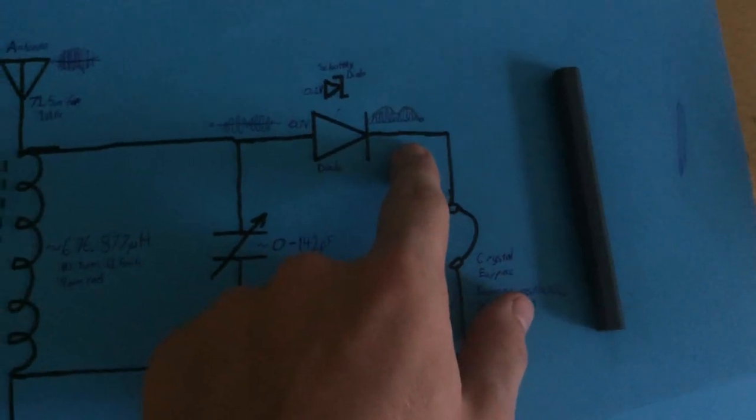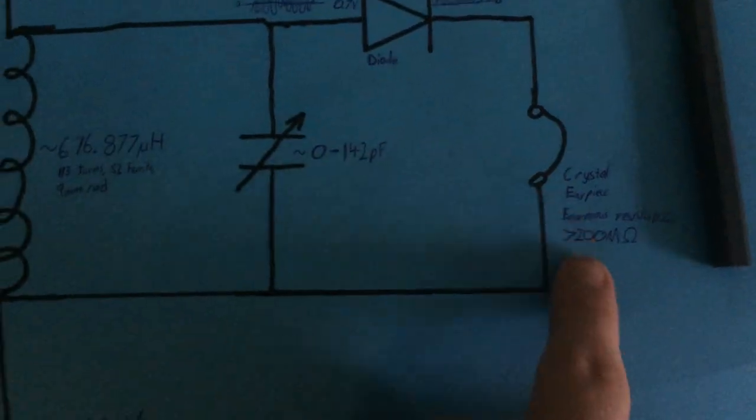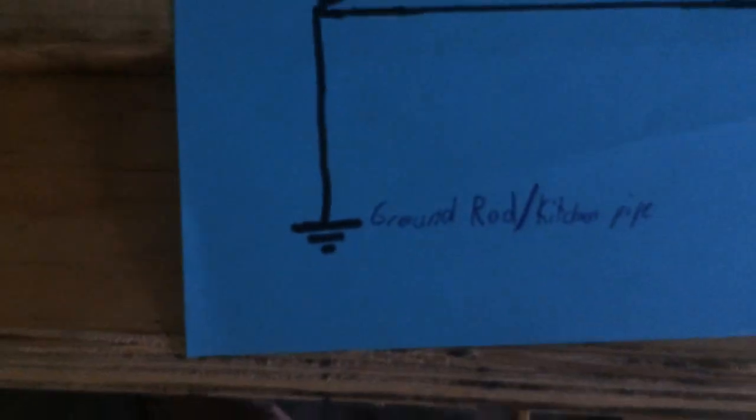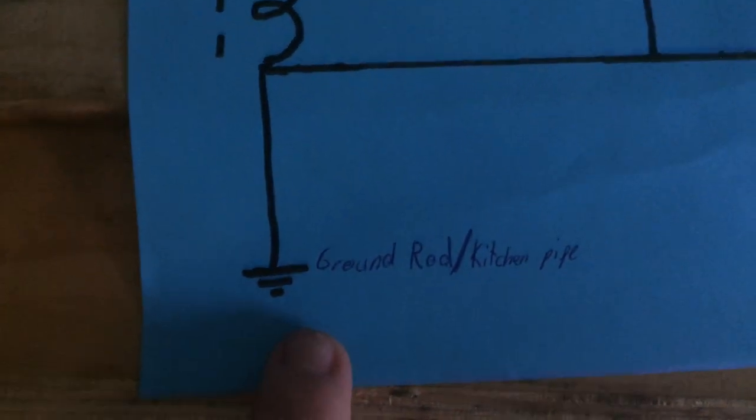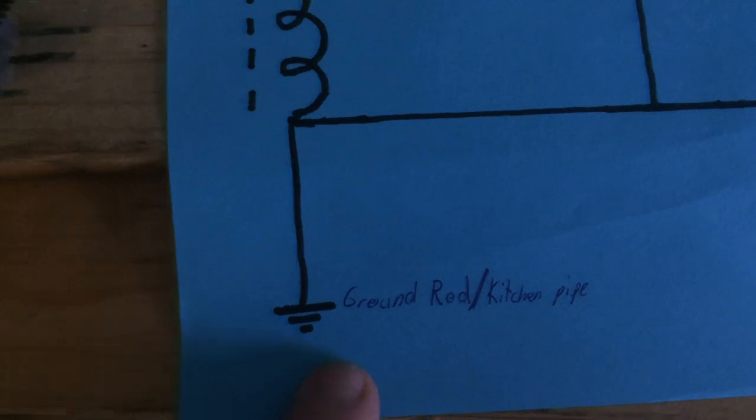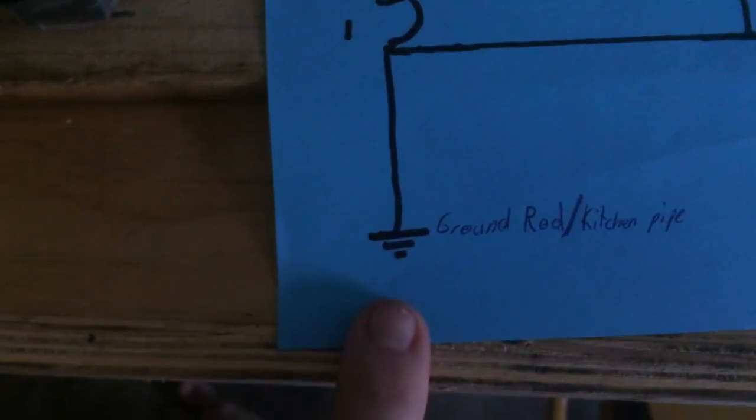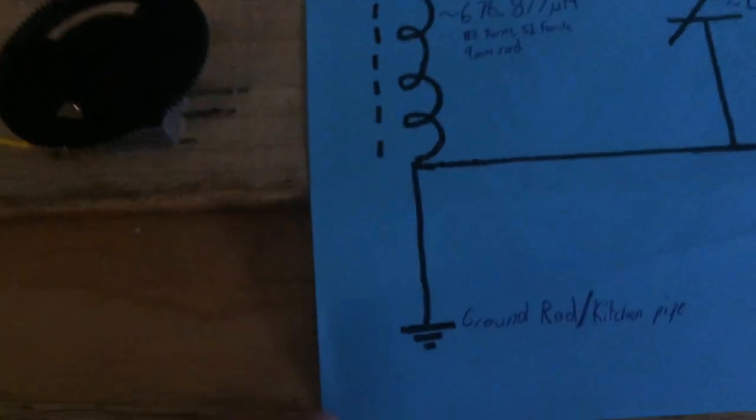So the signal comes through here. You hear it. And then that all goes back to ground. And then ground is the last component in this radio that I really need to talk about. The reason that you need a good connection to ground is because it completes the circuit and allows the electrons to start bouncing back and forth.